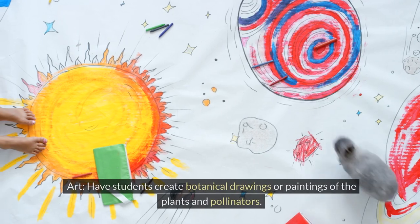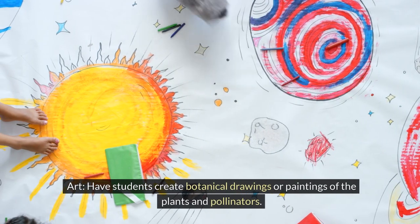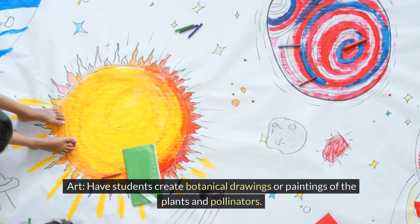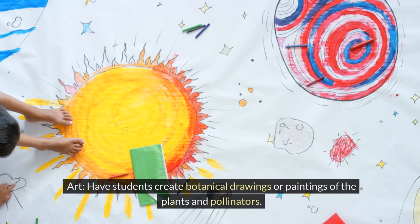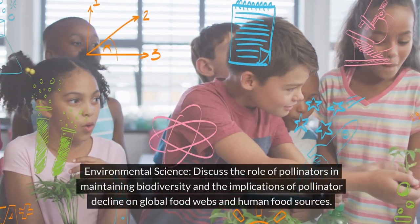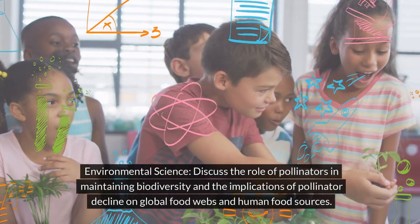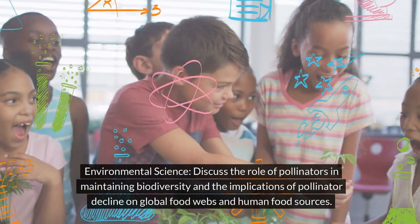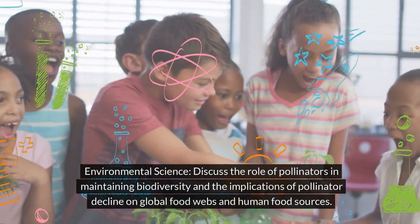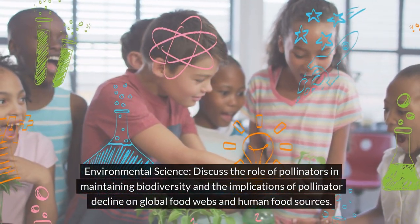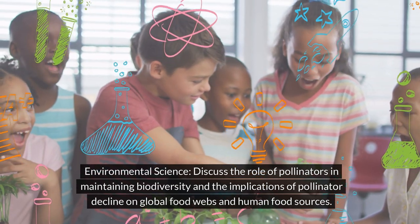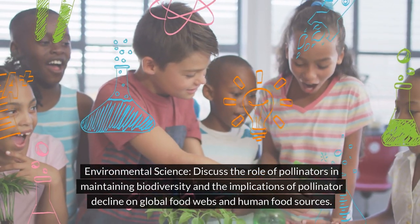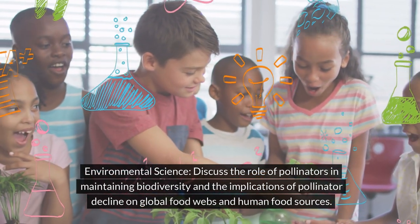Art: have students create botanical drawings or paintings of the plants and pollinators. Environmental science: discuss the role of pollinators in maintaining biodiversity and the implications of pollinator decline on global food webs and human food sources.